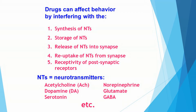It could interfere with the synthesis of neurotransmitters, their storage, or the release of neurotransmitters into the synapse. It could interrupt the reuptake process or even the receptivity of postsynaptic receptors. Interrupting synaptic transmission in any of these ways can often have predictable effects on behavior.